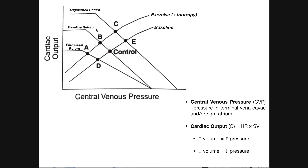There are a couple of ways to accomplish augmented venous return. One would be the skeletal muscle pump — during exercise especially, the skeletal muscle pump helps prevent pooling of blood in the legs and brings blood back up through the venous system to the right atrium. Another way would be through an IV or simply consuming a lot of fluid, which leads to a higher blood volume and therefore greater venous return. With more blood in the same-size cardiovascular system, there's going to be more blood returning to the heart at any given time.